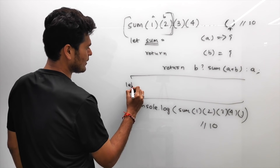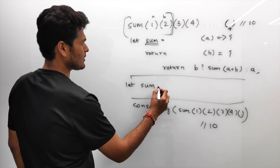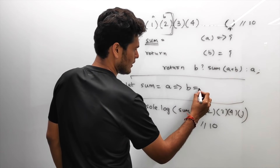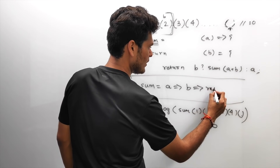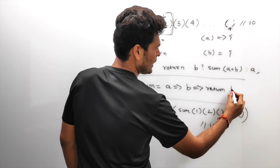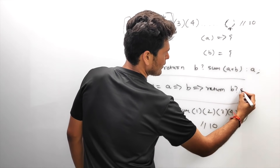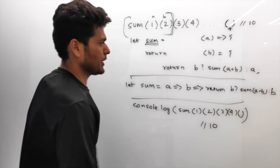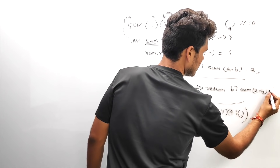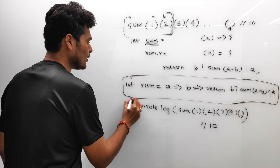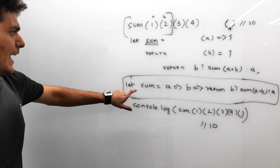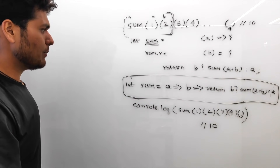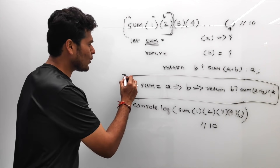This can fit in one line: `sum` is an arrow function that takes `a` and returns an arrow function that takes `b`, which returns `b ? sum(a + b) : a`. That's the entire solution in a single line. You can pass in as many arguments as you want and it will return the correct sum.